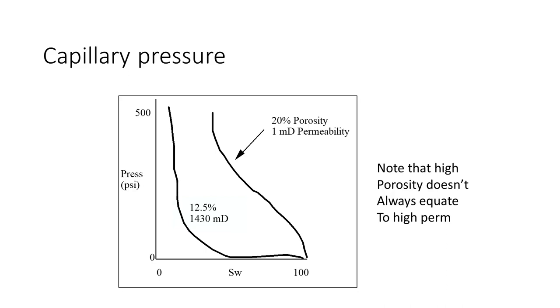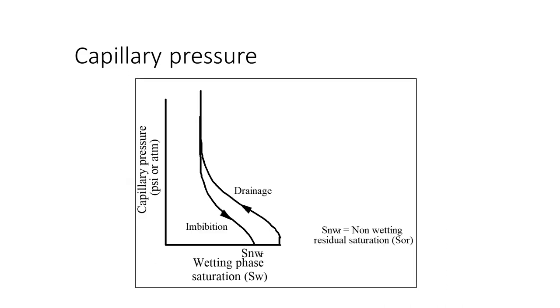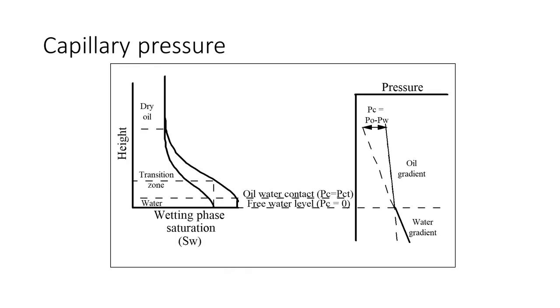That's the drainage, so that's the water draining out of the system as the oil migrates into it. Remember, there is also the imbibition part of the curve where you were flooding the reservoir with water and you're returning the water saturation to some residual oil saturation. So there is always going to be some oil left. So that's the imbibition curve.